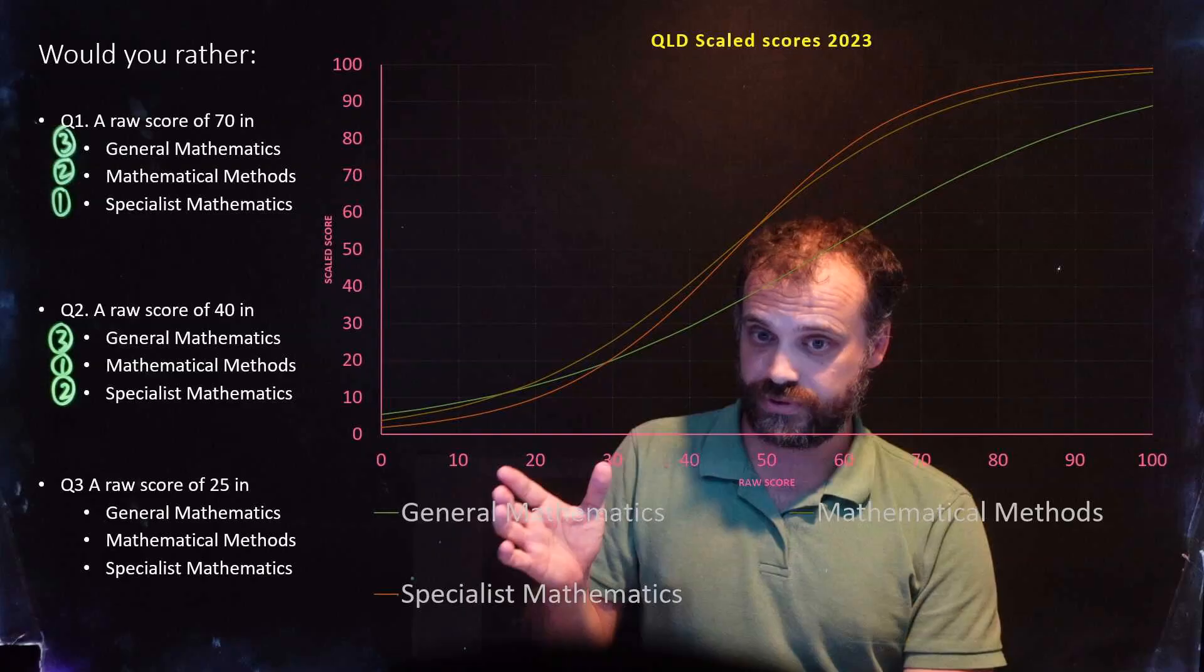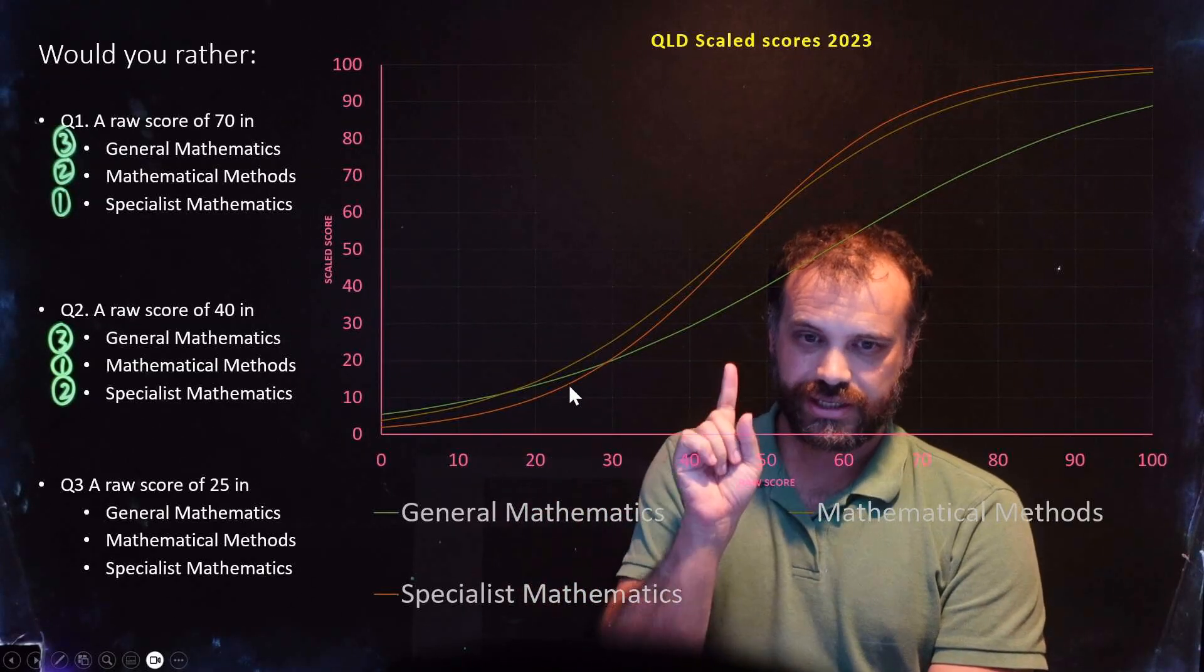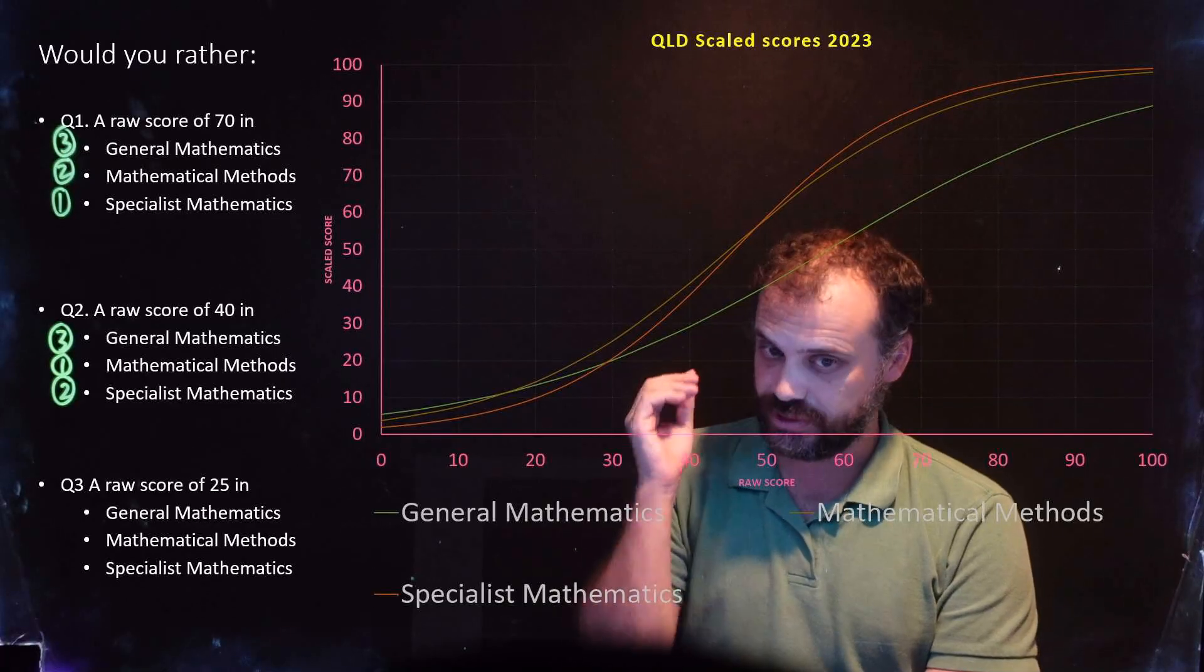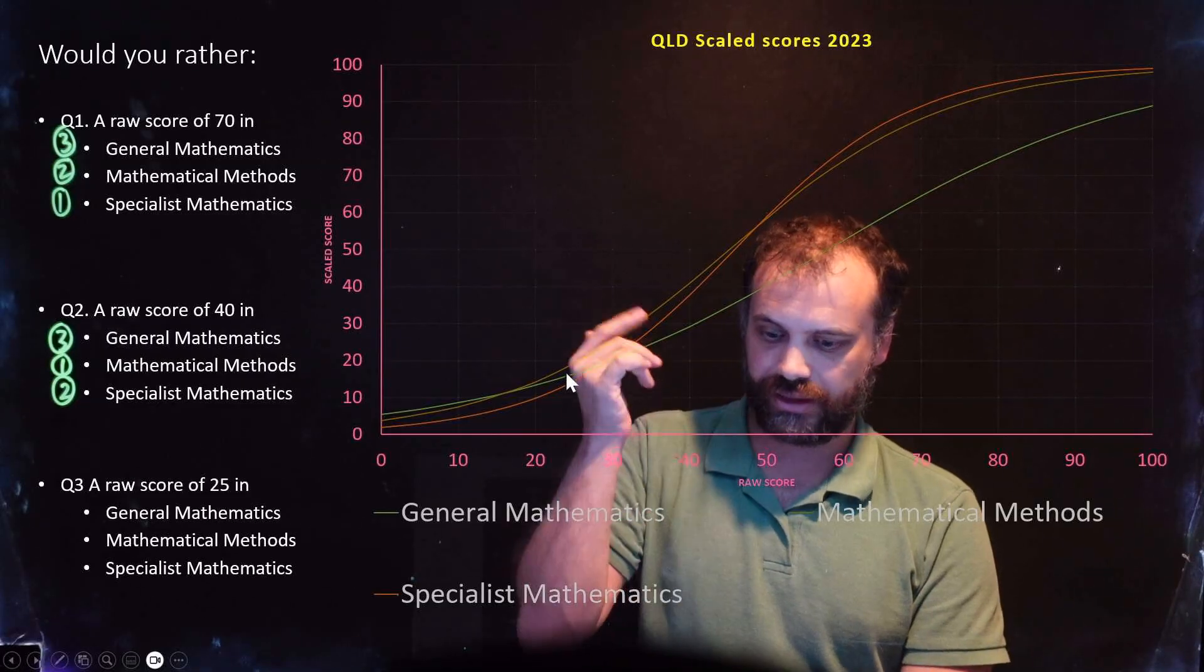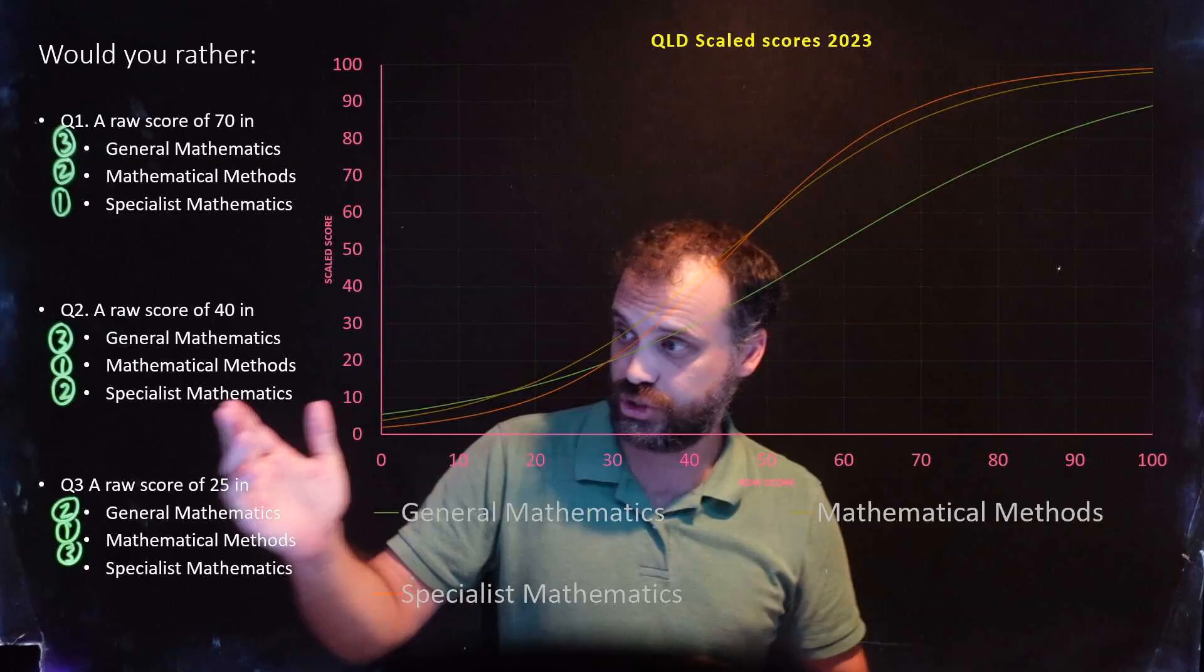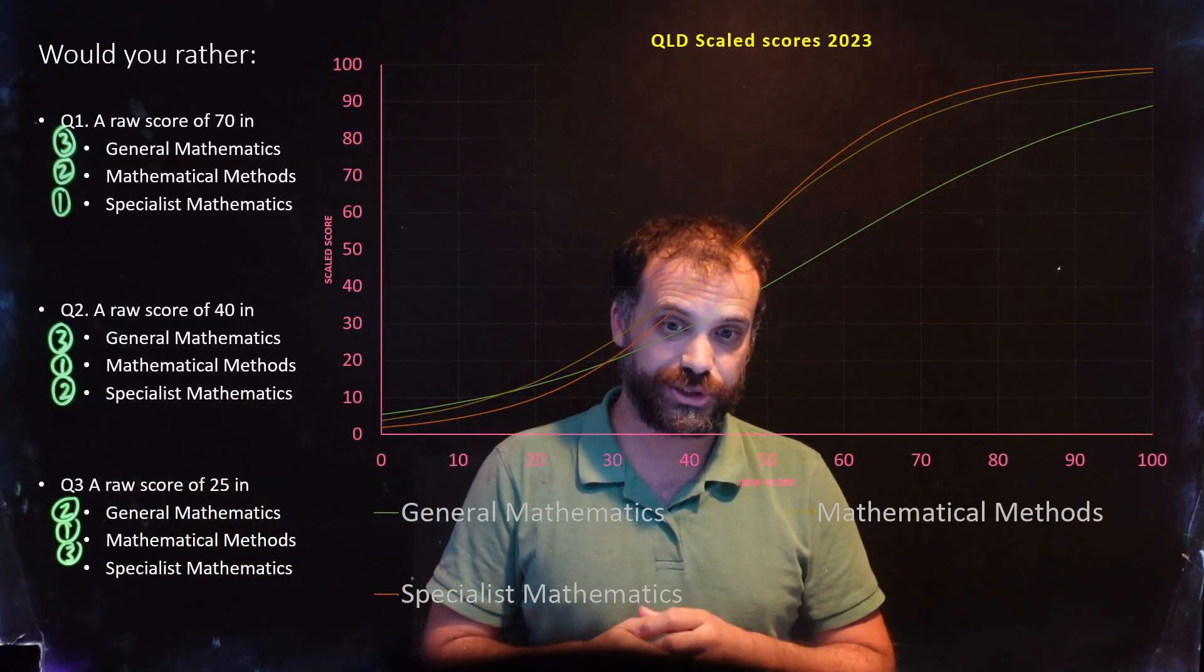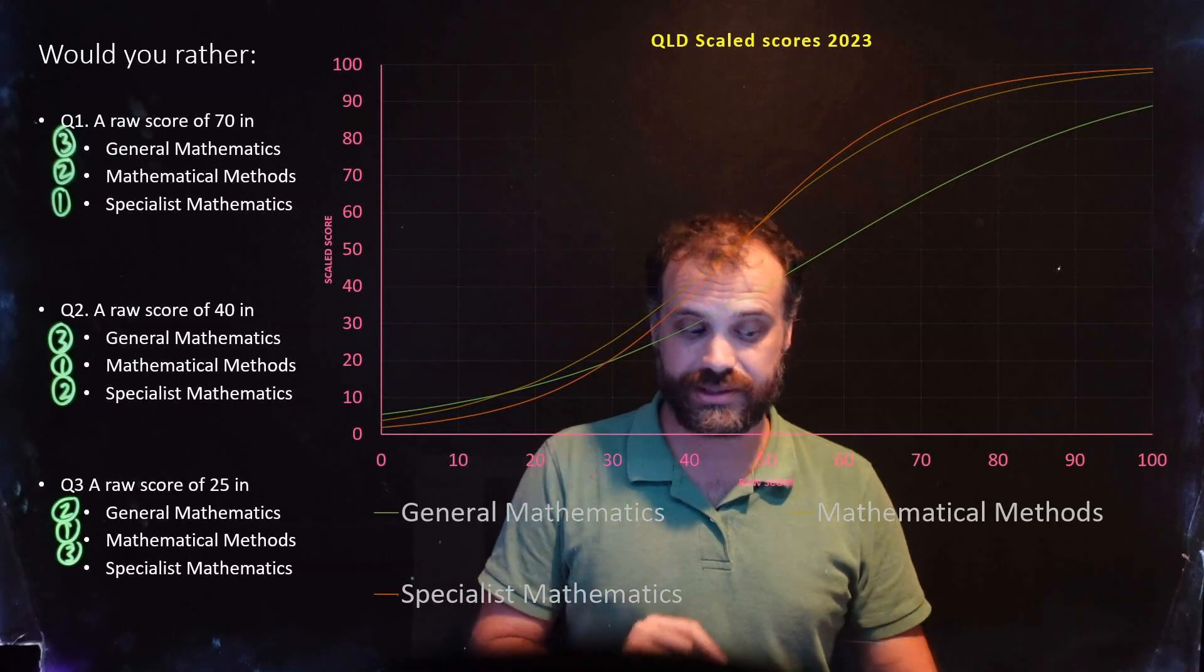According to these curves, at least, we have down in the 25s, specialist takes a real tumble, scaling lower than any of the other subjects, and then general, and then methods. Would it be accurate to say that general scales higher than specialist? In certain circumstances, I believe the answer is yes.